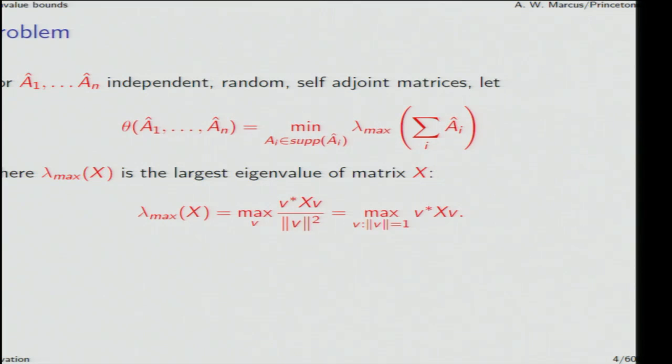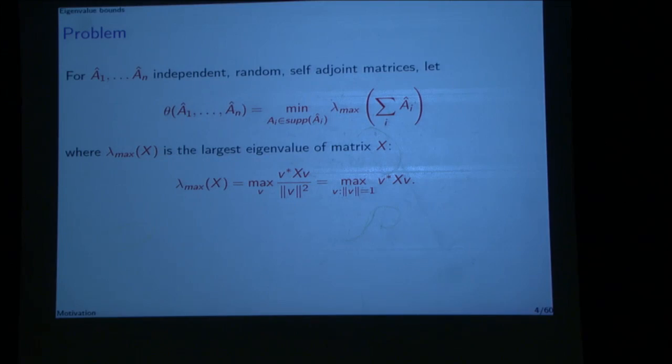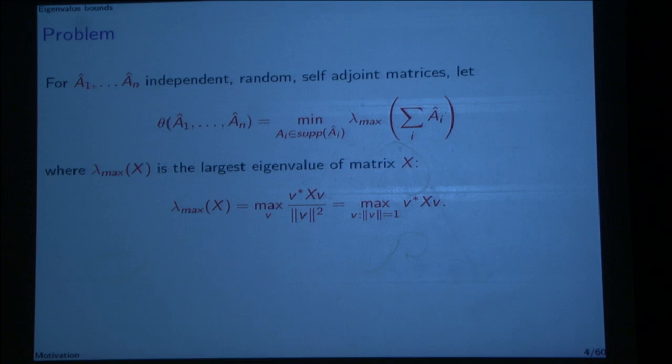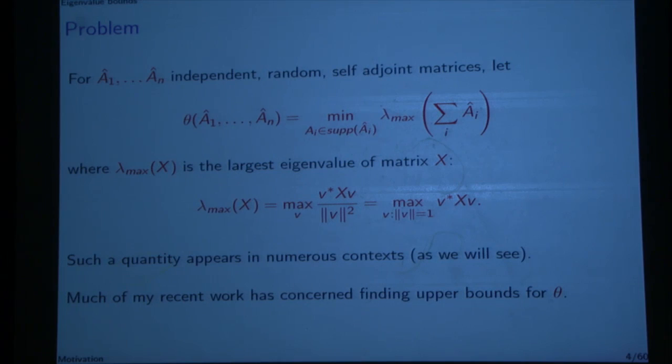I want to look at the smallest possible value that you can get for the largest eigenvalue of the sum. So I go over all possible ways of doing these things, look at the largest eigenvalue, and want that to be as small as possible. Such a quantity appears in numerous contexts, as we'll soon see. A lot of my recent work has been concerned with understanding upper bounds for exactly this quantity.